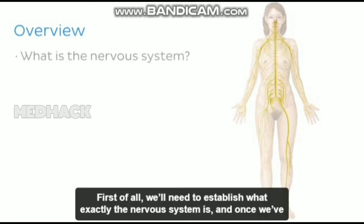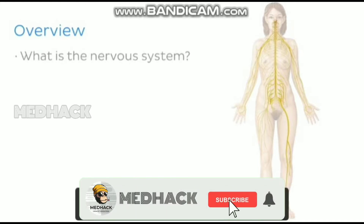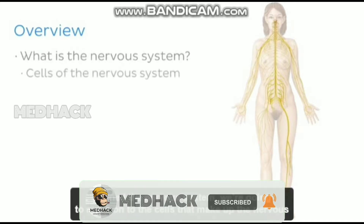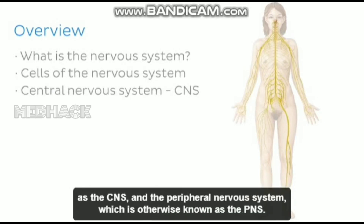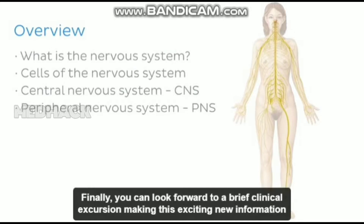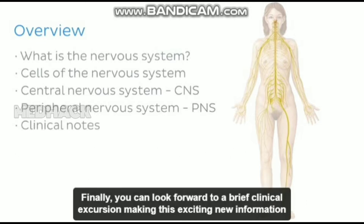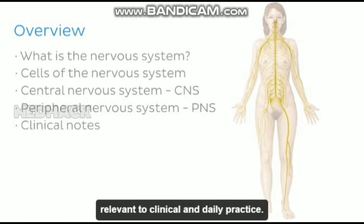First of all, we'll need to establish what exactly the nervous system is, and once we've defined the nervous system, we're going to move on to the cells that make up the nervous system. We'll also talk about the central nervous system, which is often simply referred to as the CNS, and the peripheral nervous system, which is otherwise known as the PNS. Finally, you can look forward to a brief clinical excursion, making this exciting new information relevant to clinical and daily practice.